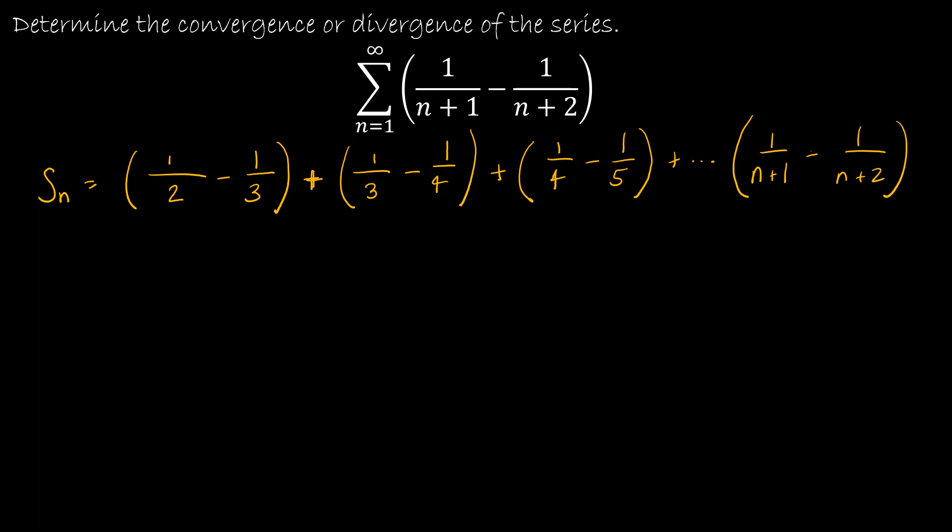Now looking at this, I can see there's a specific pattern. I've got minus 1 third and plus 1 third, and those would cancel. And I have minus 1 fourth and plus 1 fourth. I can see that would continue, negative 1 fifth and positive 1 fifth. And the only thing that would be left is that my partial sum can be written as 1 half minus 1 over n plus 2.